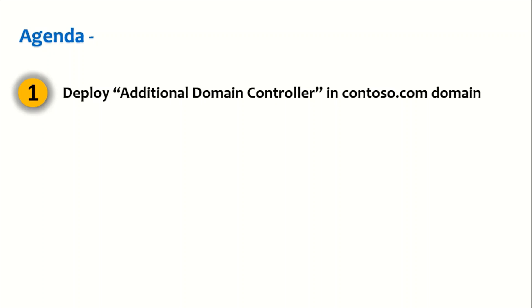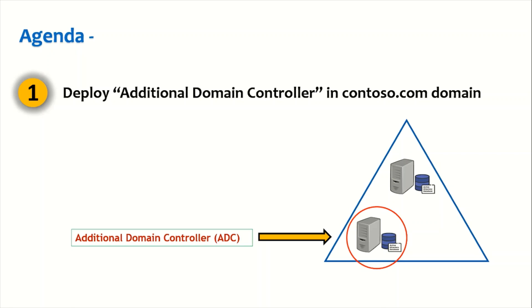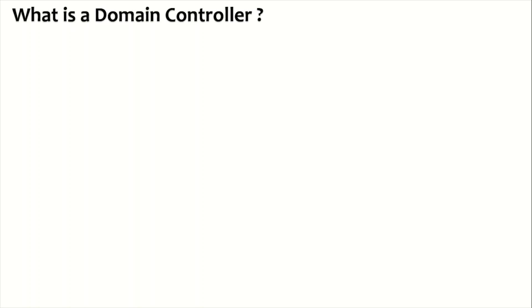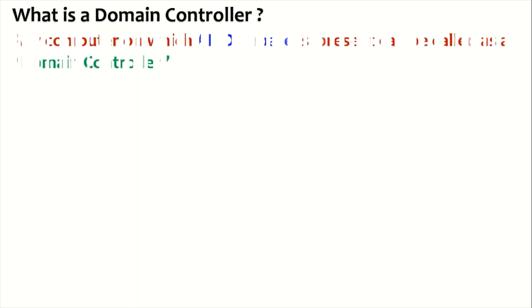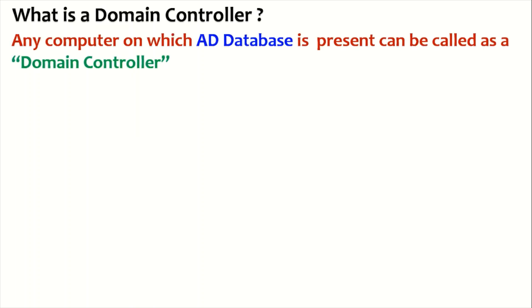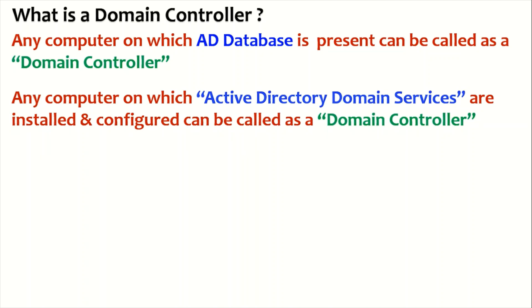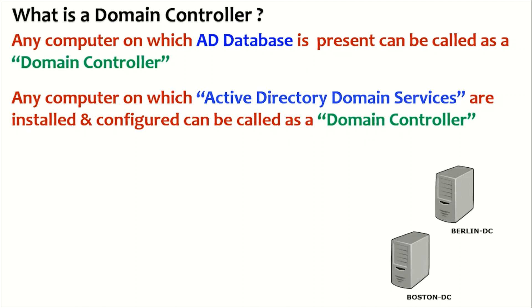We'll be bringing up a new domain controller in an existing domain. Before we begin, let's understand what a domain controller is. Any computer on which the Active Directory database is present, or on which Active Directory Domain Services are installed and configured, can be called a domain controller. We have two servers here — Berlin DC and Boston DC.